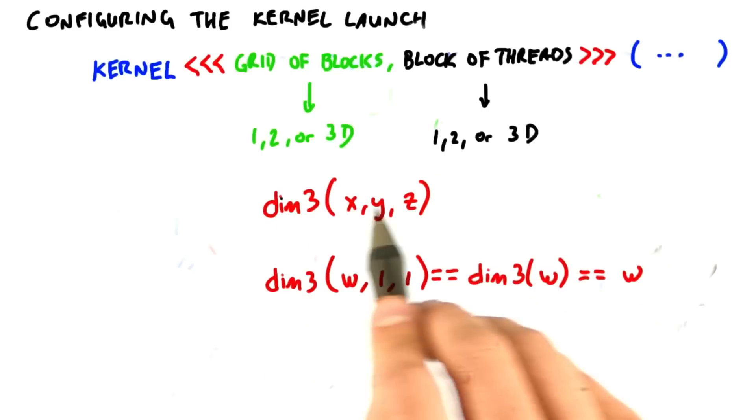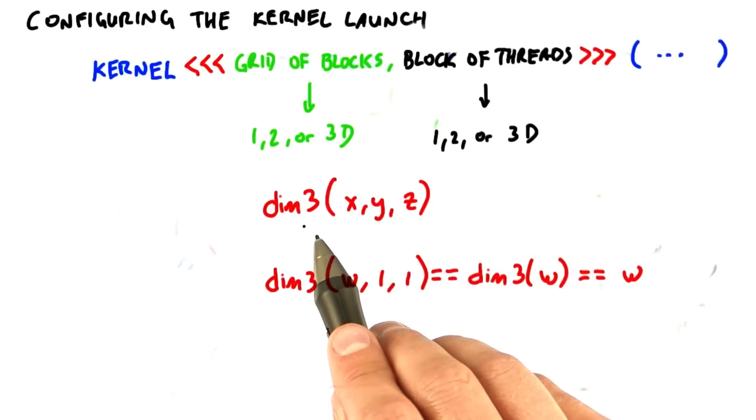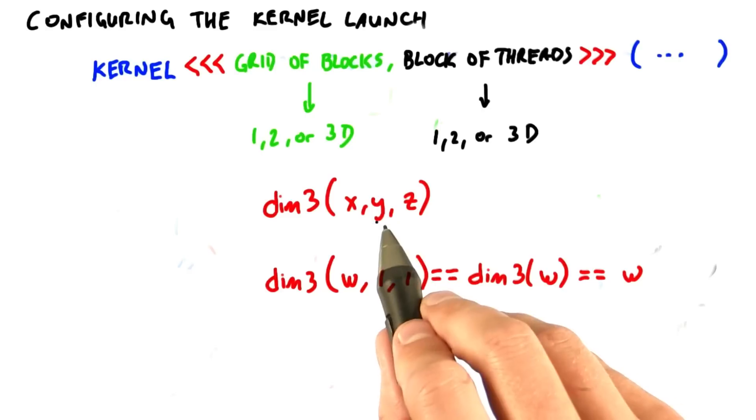More generally, you can specify a three-dimensional configuration for grid of blocks, or block of threads, with this dim3 struct, which you initialize as dim3. And recall that, again, if we don't specify y or z, they default to one.